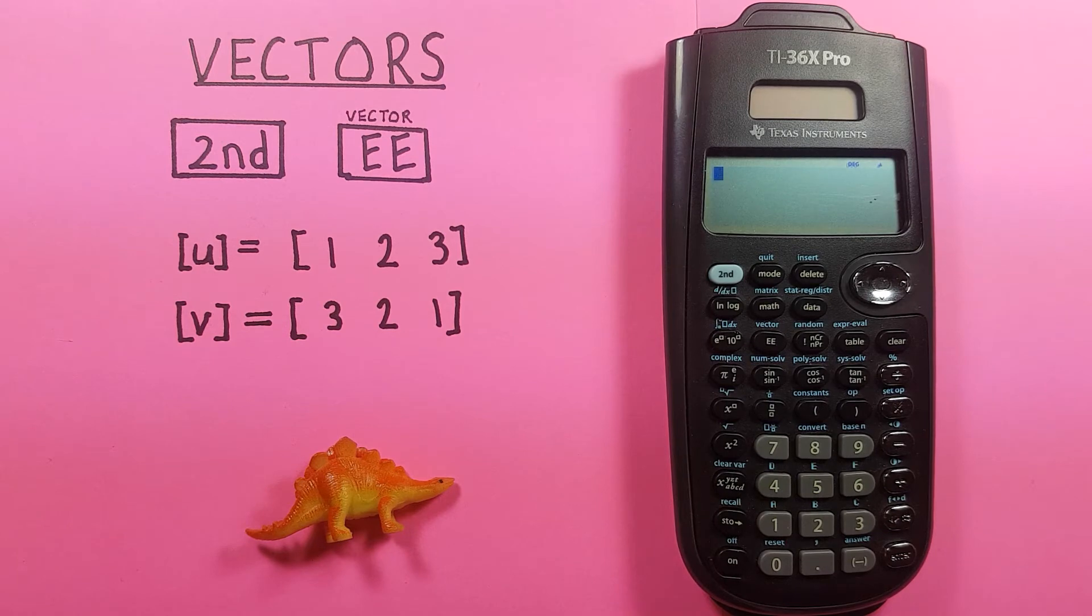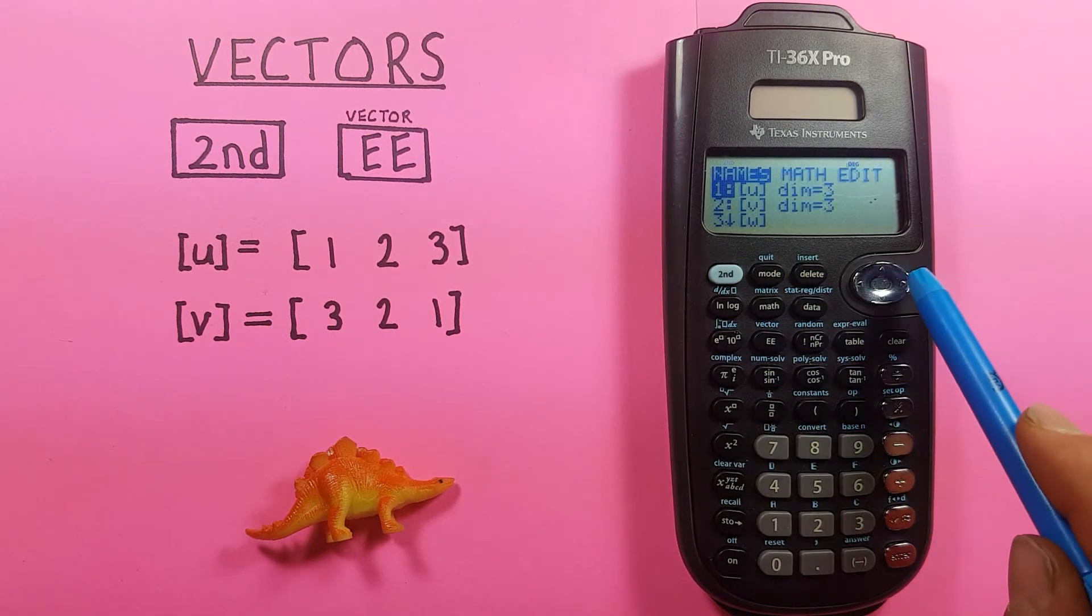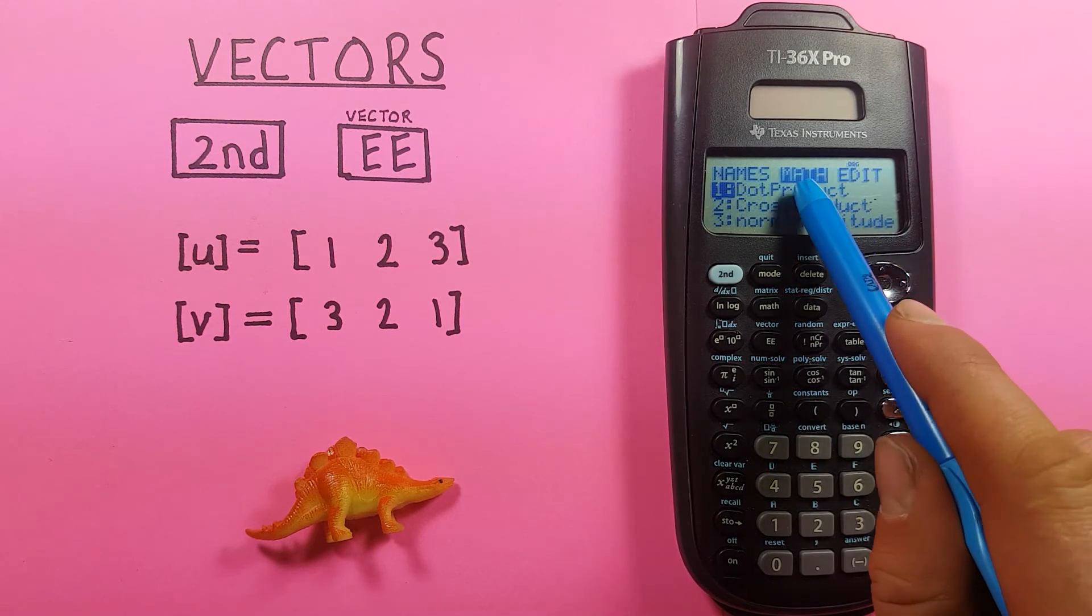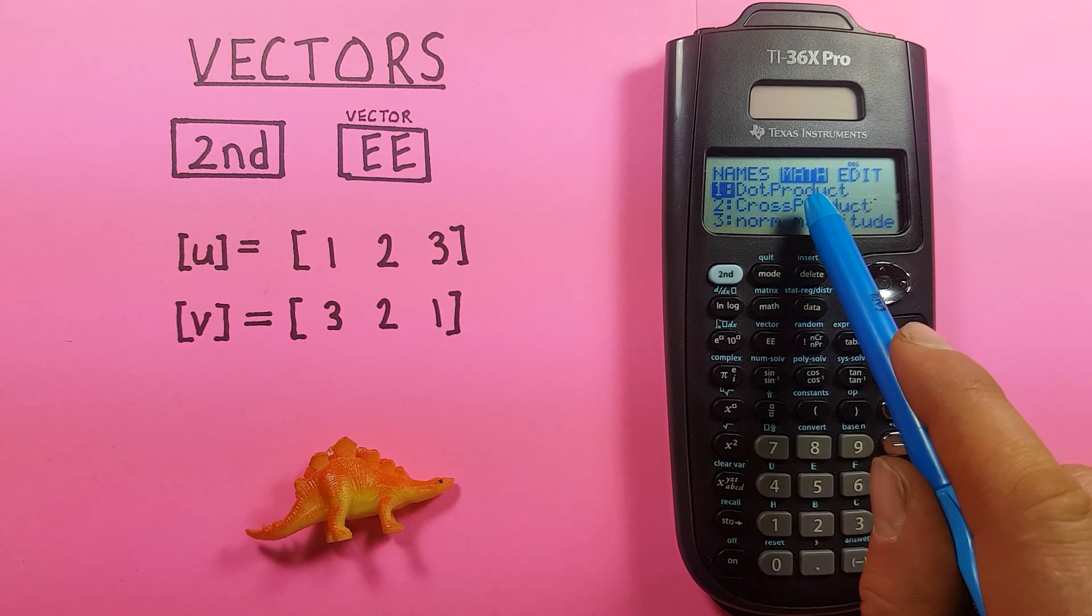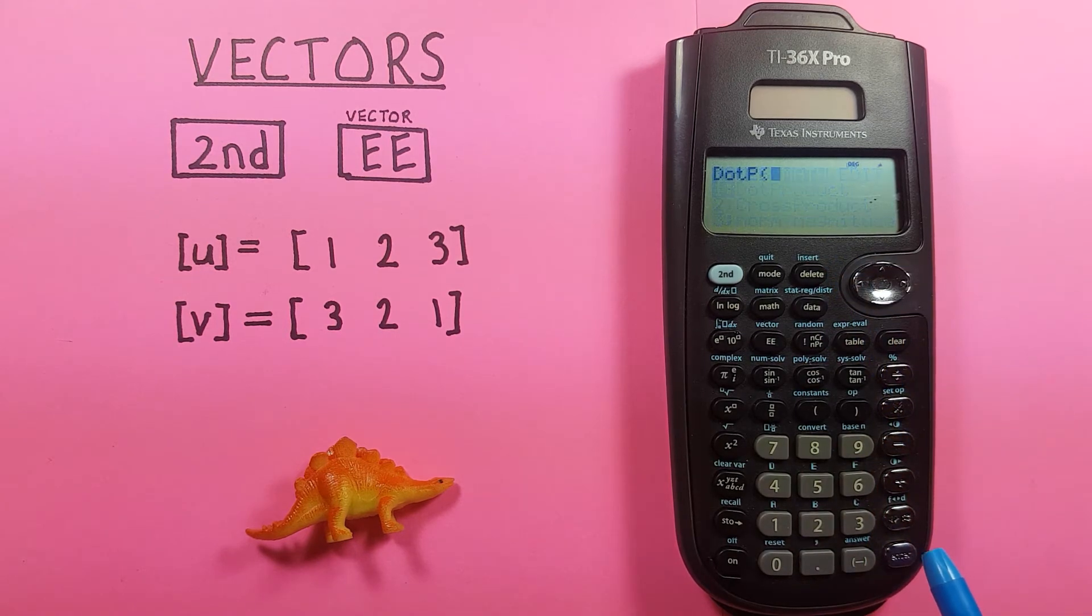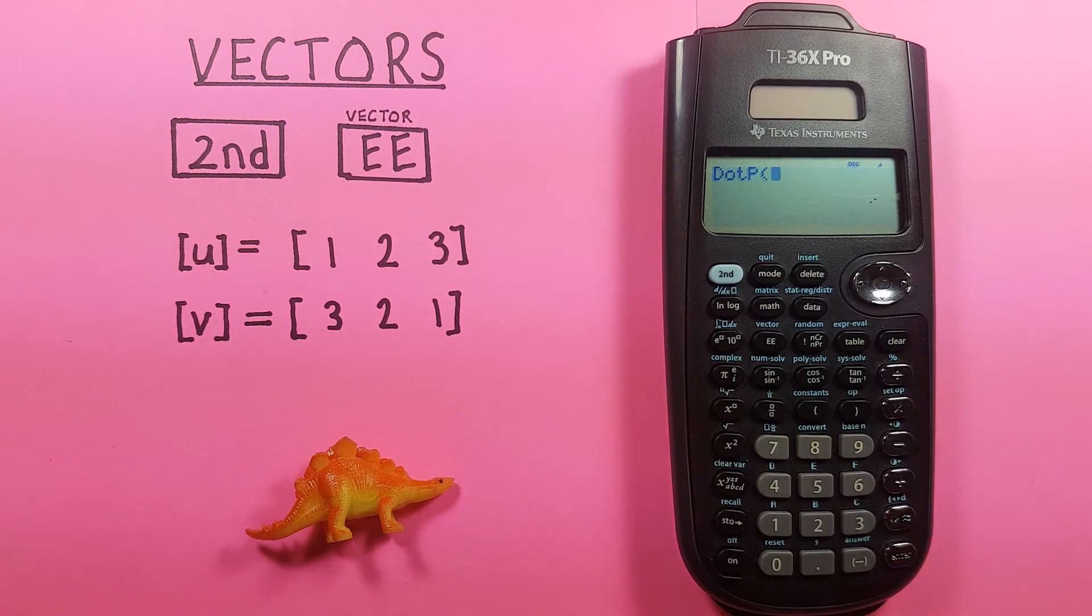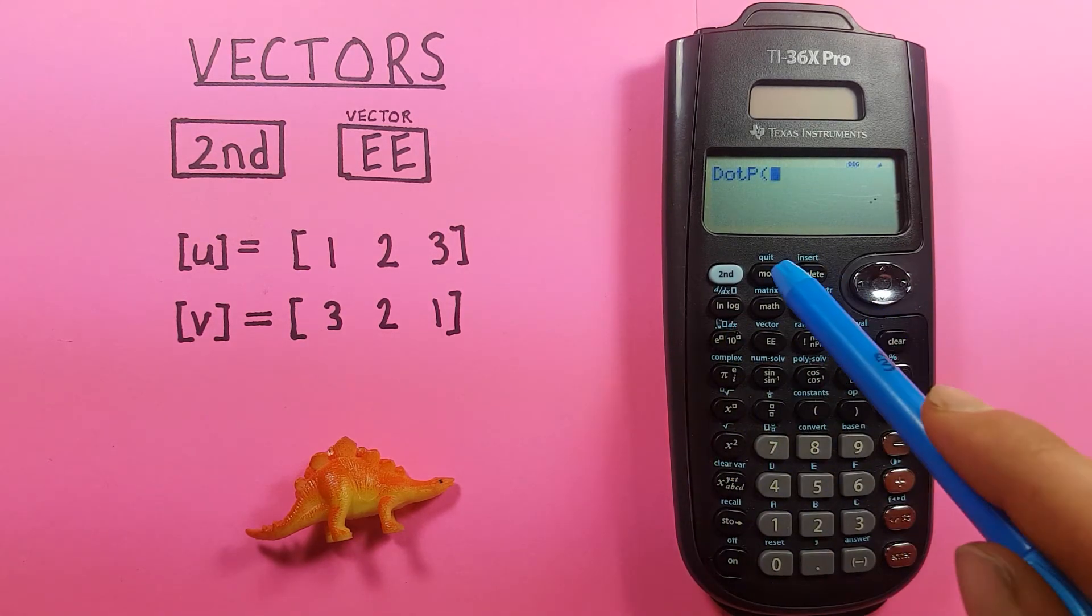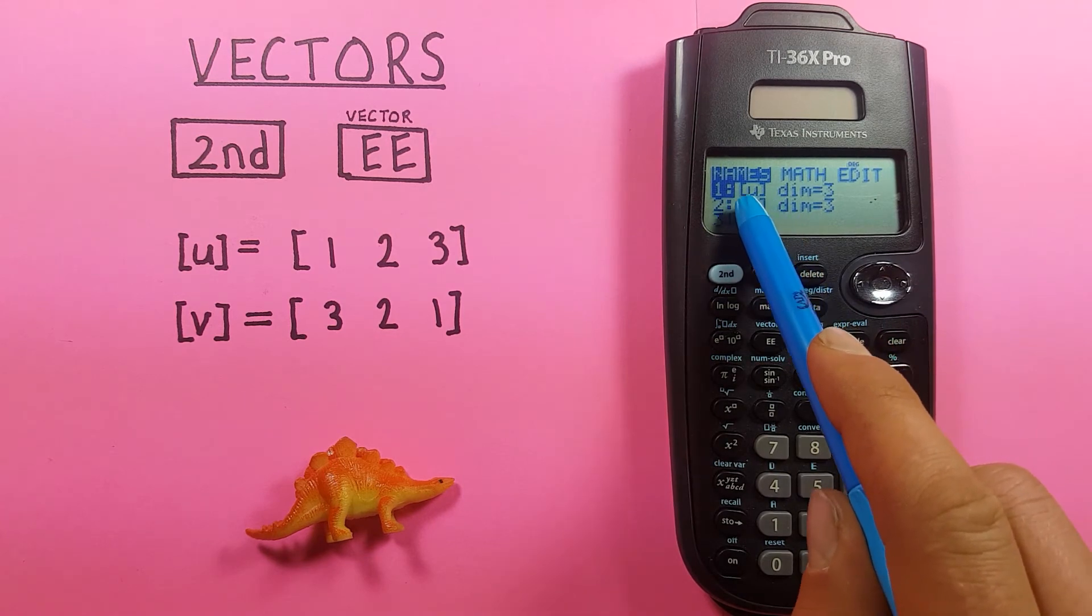We can also find the dot product of these two vectors by pressing the second EE key, moving to the right one, highlighting math. And we see our first option here is dot product. So if we press enter on that, we see dot p on our main screen. Now we go back to our vector menu with second EE and select U, so we press enter there.